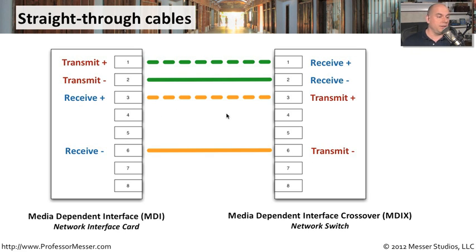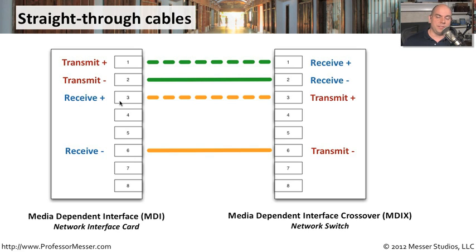The other pins — 4, 5, 7, and 8 — may still be wired inside the cable, but ethernet only uses two pairs: pins 1, 2, 3, and 6. Because the receive and transmit are simply swapped between the MDI and MDI-X, you can use a straight-through cable directly between them. That's why when we connect workstations directly to a network switch, we don't need any special cabling — just that patch cable with straight-through wiring inside.